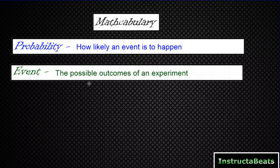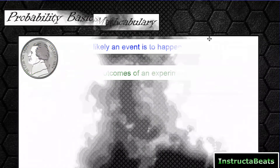Let's say you're doing an experiment — you're going to flip a coin, and you want to know what are the possible outcomes. Well, the possible outcomes are heads or tails. So when we're talking about an event, we're talking about the event of the coin landing on heads or the event of the coin landing on tails. Let's use that example to learn about some probability basics.